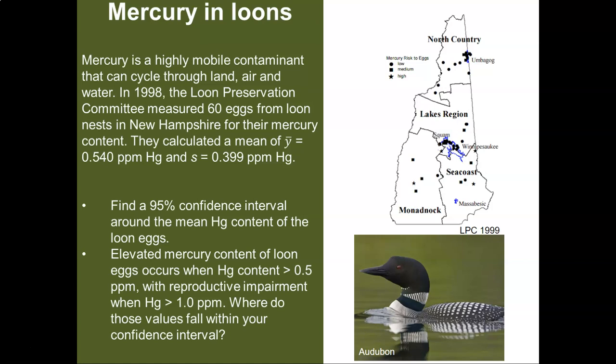And then the second part says that the elevated mercury content of loon eggs occurs when mercury content is greater than 0.5 parts per million. And now the loon eggs actually get reproductively impaired when mercury is greater than 1.0 parts per million. And so let's look at these values 0.5 and 1.0 and see where they fall within our confidence interval. And so we'll do some calculations with these data.